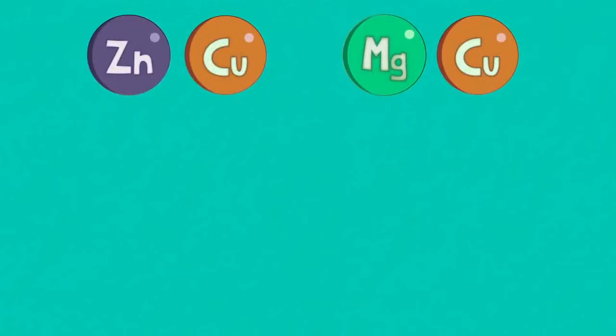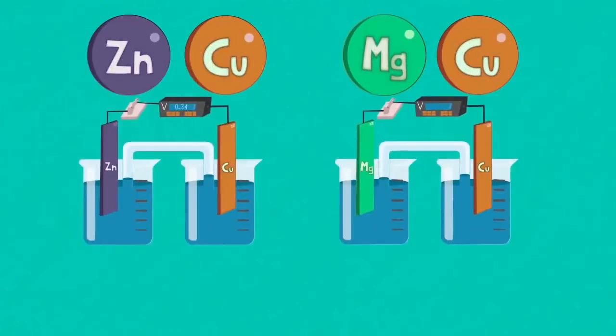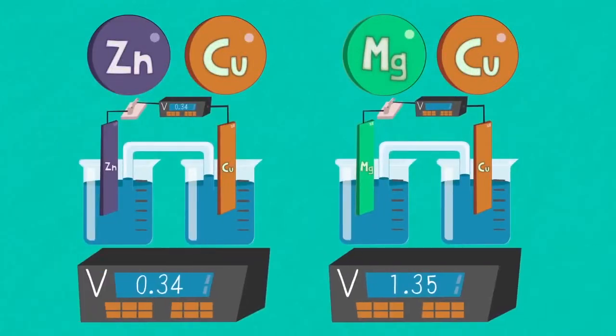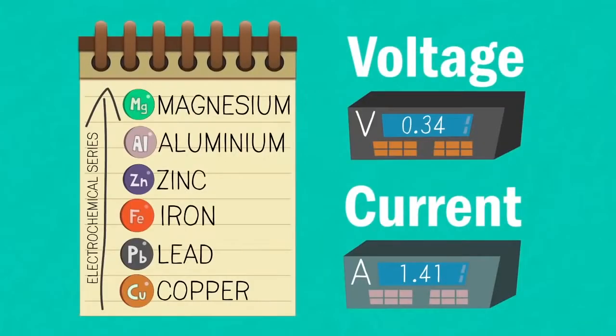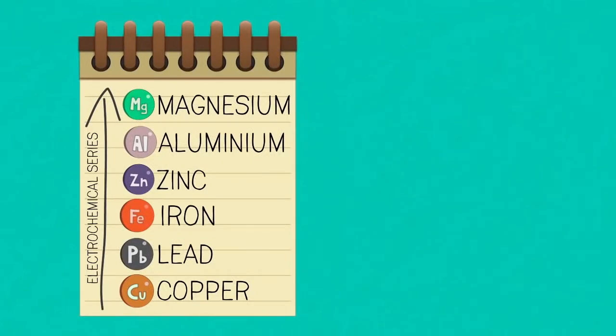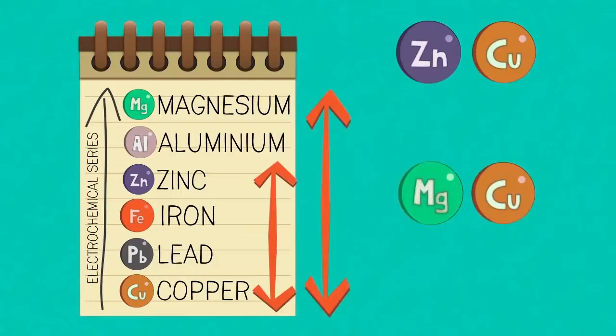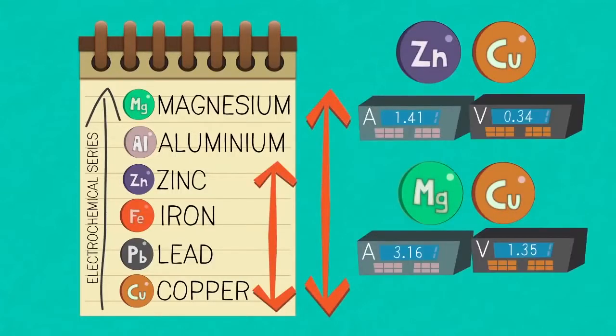One: different combinations of metals connected in an electrochemical cell will produce different voltages. Two: the size of the voltage and the current is dependent on the metals' position in the electrochemical series. And three: the further apart the metals are in the electrochemical series, the greater the size of the current and voltage produced.